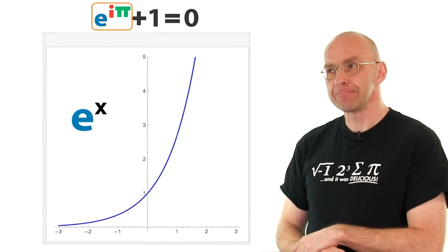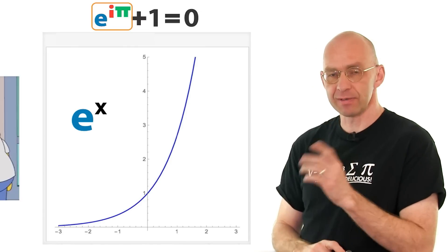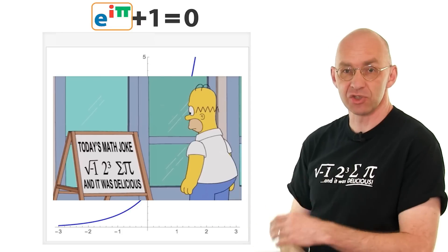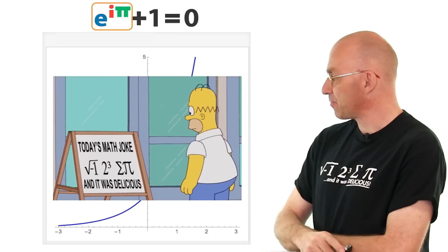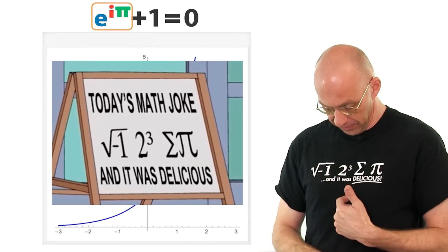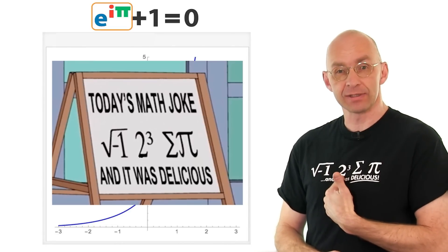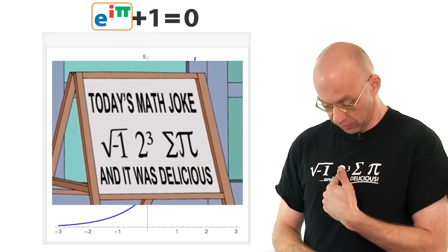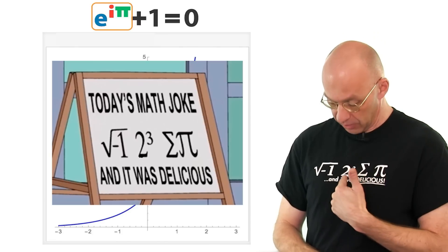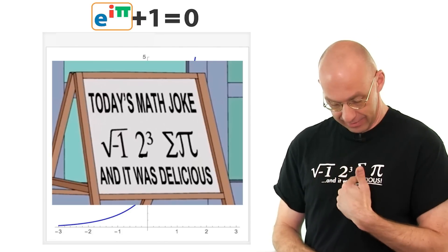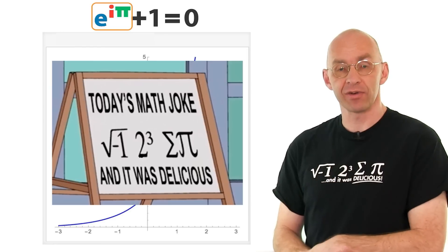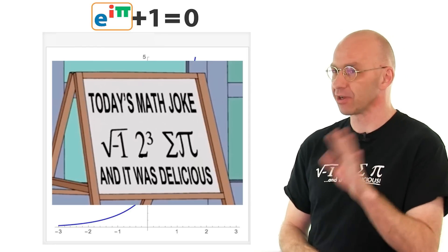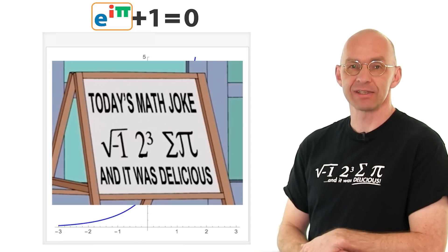There is one other occurrence of i in the whole of the Simpsons. Homer is looking at this joke, which I've also got on a t-shirt. There are lots of mathematical symbols here. For example, 2 to the power of 3 is 8, that's a sum symbol, and that's pi. So: 8 sum pi. To complete the whole thing, you just say 'i 8 sum pi.' So this is i — i is the square root of minus 1. That's a strange number. It's not like 1, 2, 3. It's a complex number.